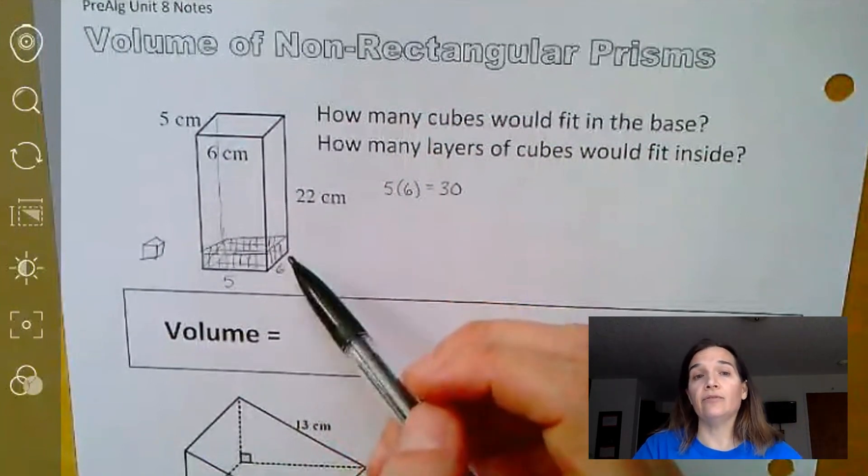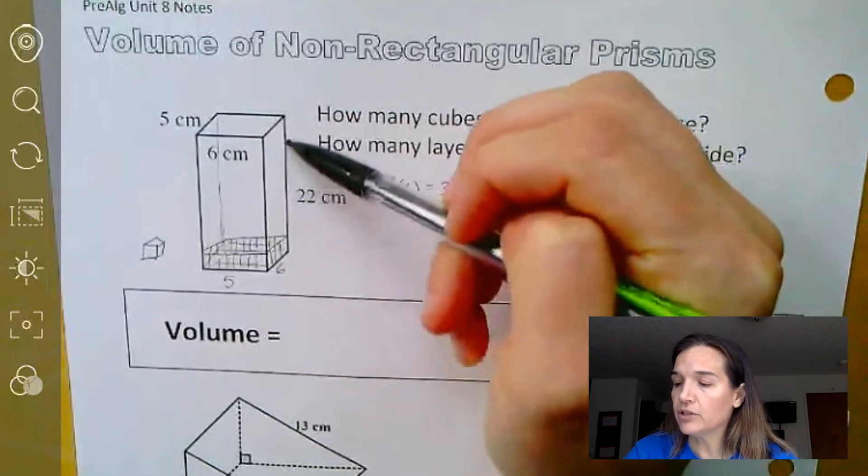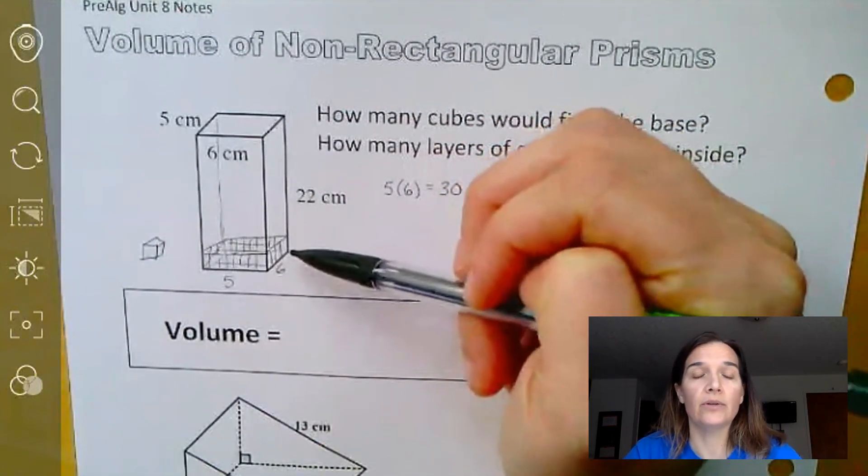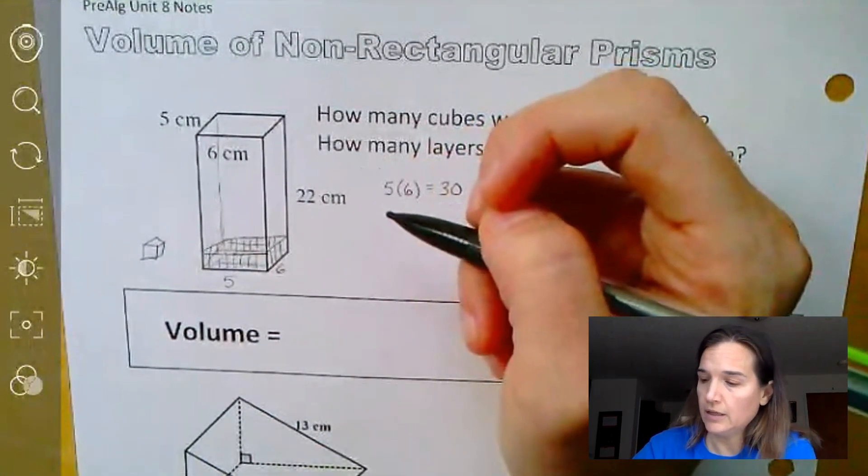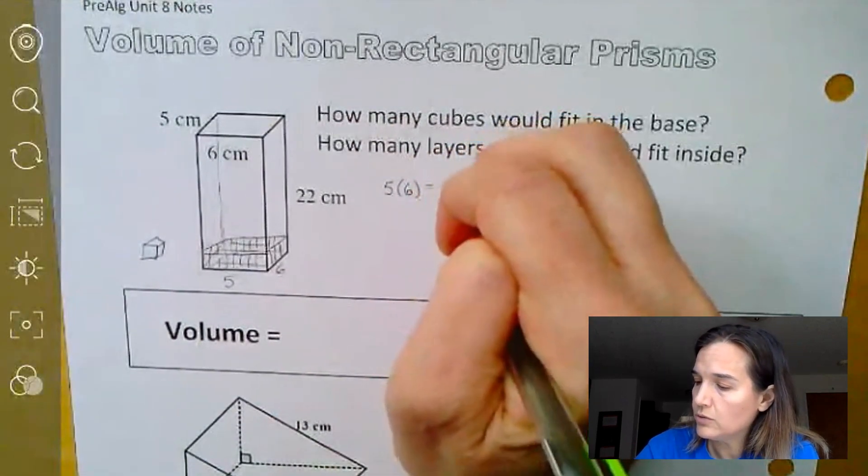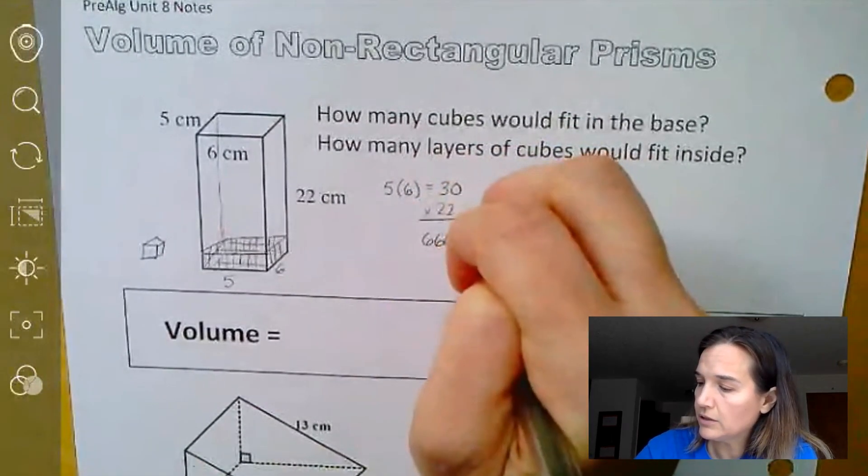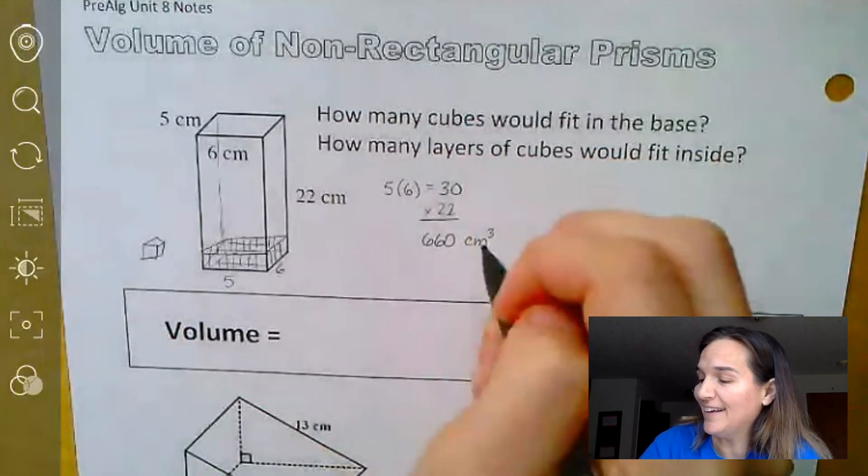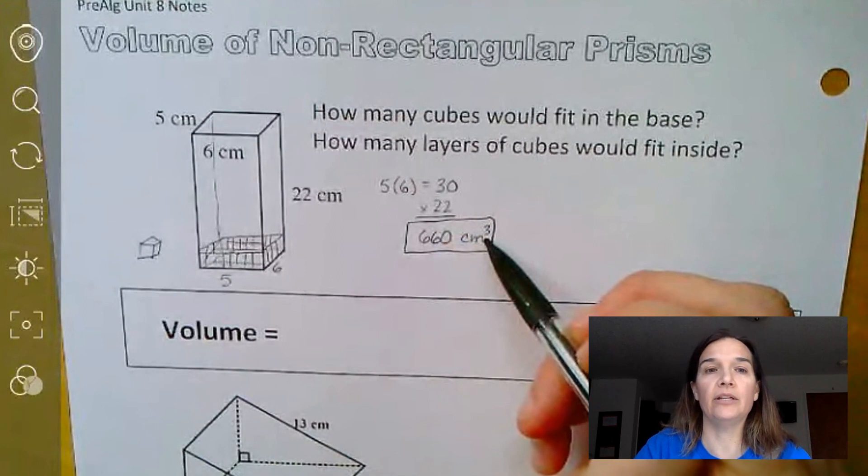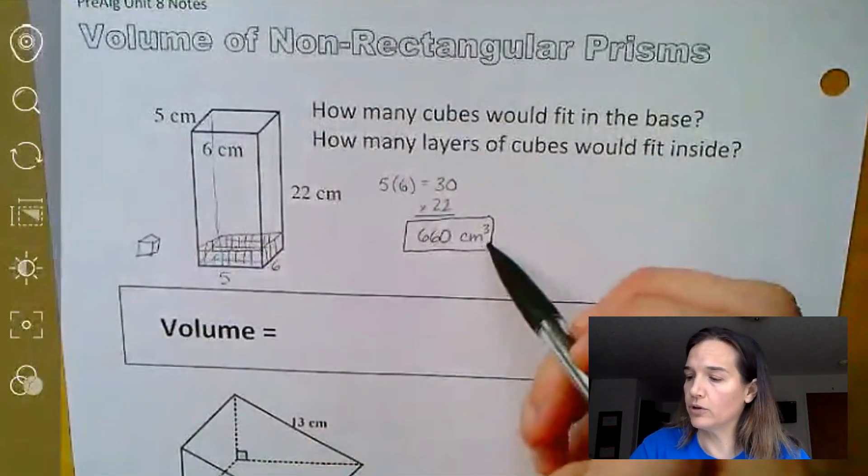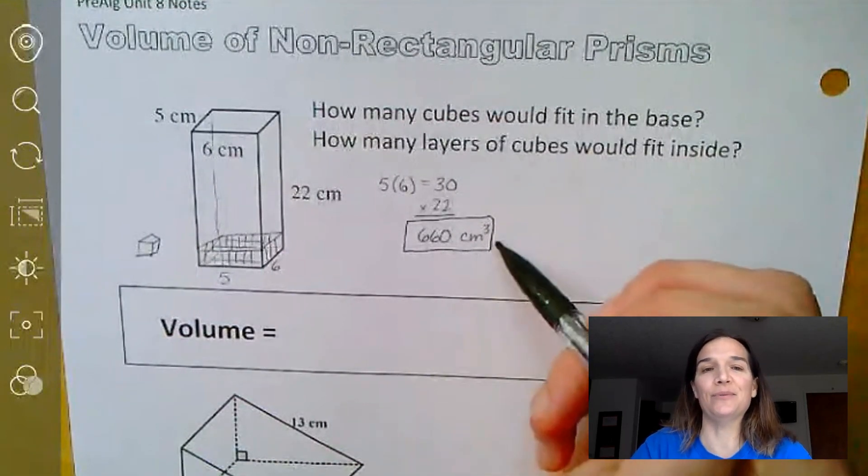And then if we can take that information and think, this has a height of 22 centimeters, we could fit 22 layers of cubes on this one. So we take the 30 that are there times the 22 layers that we could have. And so we do 30 times 22, and then we end up with 660 centimeter cubed cubes will fit in there. And that's actually where the cubed comes from. When we're talking about volume, we're talking about how many cubes would fit inside something. And therefore our units are going to be 660 centimeters cubed.